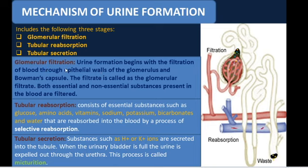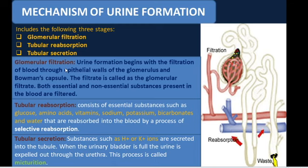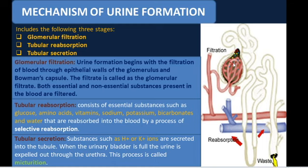The first stage is glomerular filtration, where urine formation begins. Filtration of blood takes place through the epithelial walls of the glomerulus and Bowman's capsule. Here, both essential and non-essential substances present in the blood are filtered.